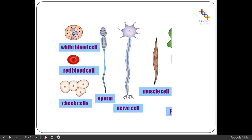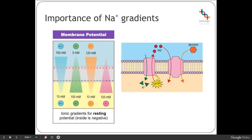The sodium-potassium pump is present in quite so many cells because it's really important in a few different processes. One of them is creating the resting potential of the membrane, which involves the activity of neurons — we'll come back to that in a few weeks' time. The one we're going to look at now is how it also helps drive the active transport of glucose through something called the glucose symport.